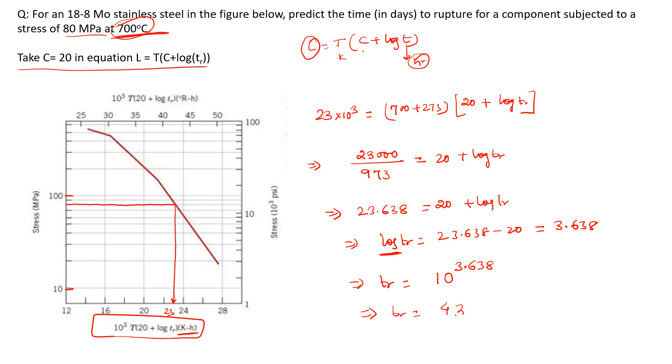This gives 4,345 hours. Since we need the answer in days, we divide by 24: 4,345 divided by 24 equals 181 days approximately.